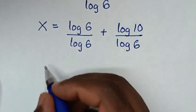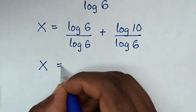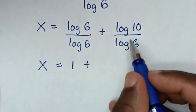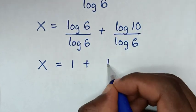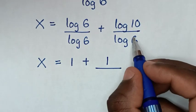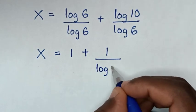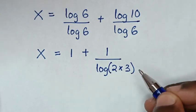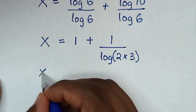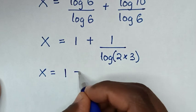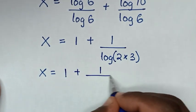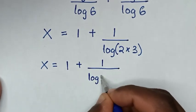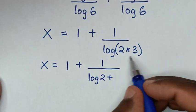Then x is equal to log of 6 divided by log of 6, which is 1, then plus log of 10, which is also 1, over log of 6. And log of 6 is the same as log of 2 times 3, so it becomes 1 plus 1 over log of 2 plus log of 3.